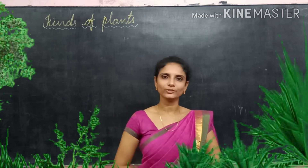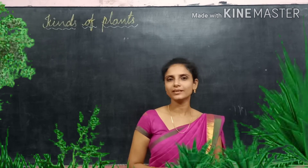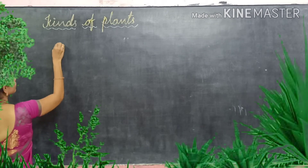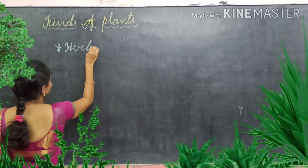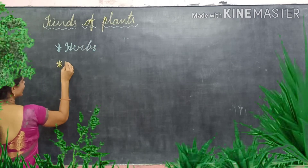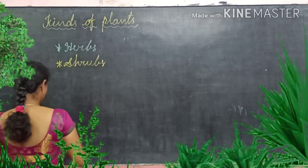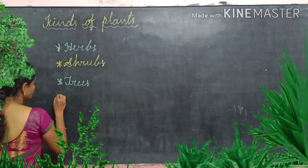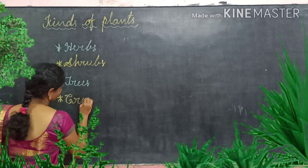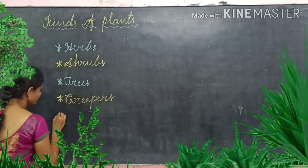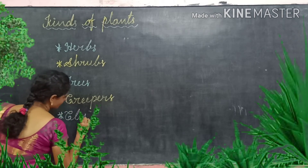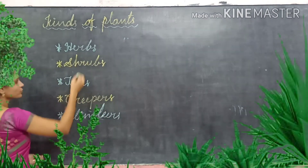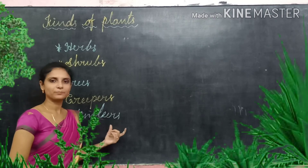Based on their size, plants are divided into five types. The five types are: first, herbs; second, shrubs; third, trees; fourth, creepers; and fifth, climbers. These are the five kinds of plants based on size.